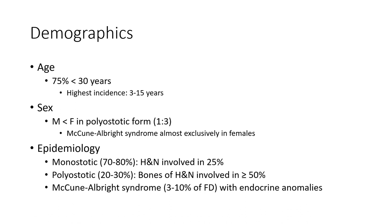Epidemiology: Monostotic form accounts for 70-80%, with head and neck involvement in 25%. Polyostotic form accounts for around 20-30%, with bones of the head and neck involved in more than 50%. McCune-Albright syndrome represents 3-10% of fibrous dysplasia cases with endocrine anomalies.